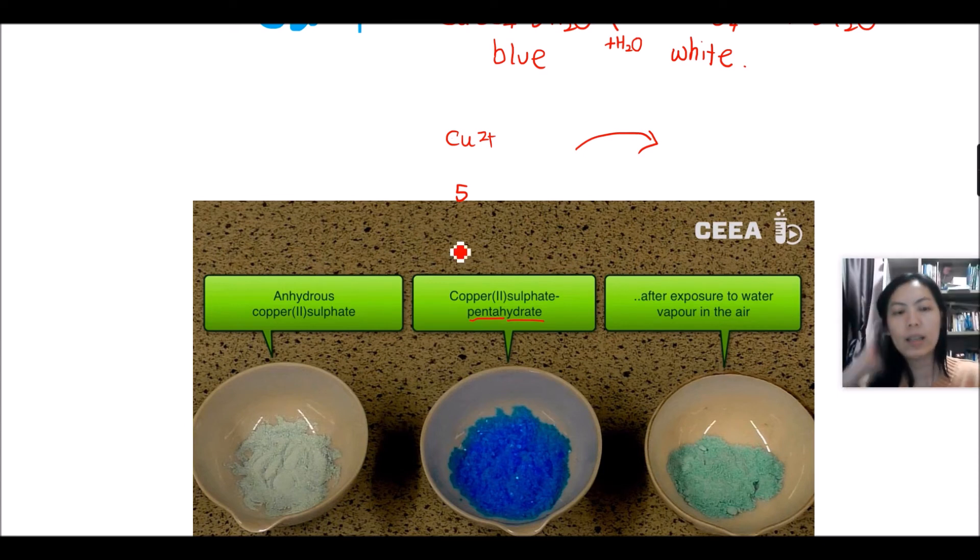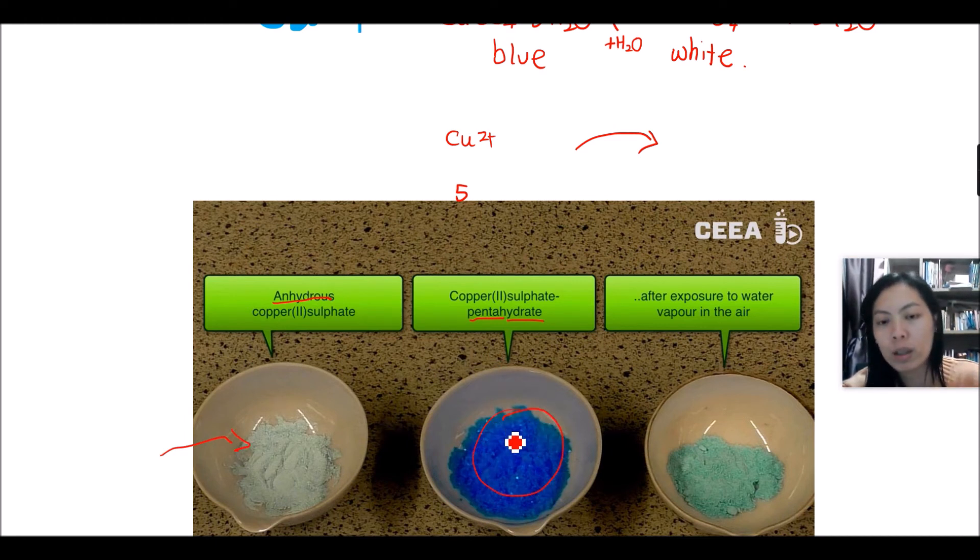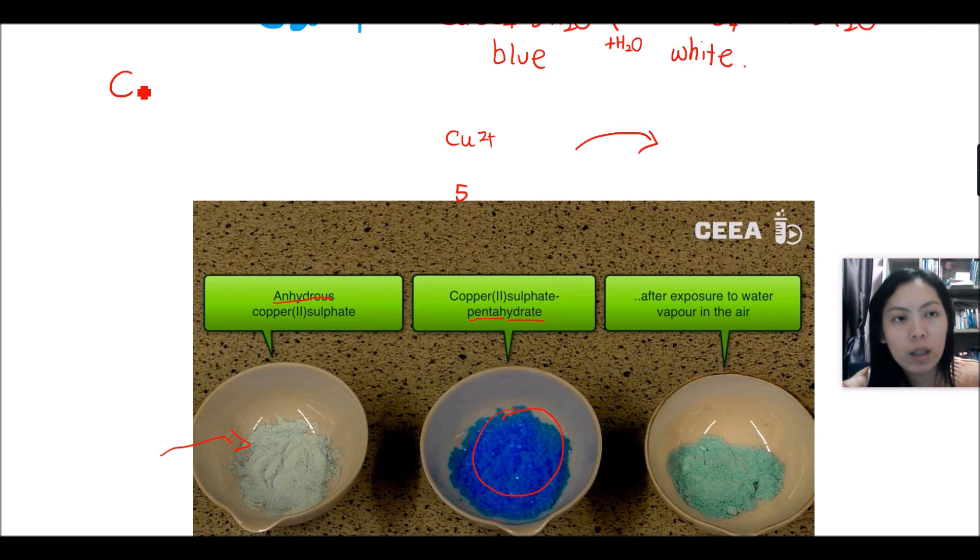Okay, as you can see here, this is the anhydrous, absence of water. When there isn't any water, the copper sulfate will be this color. In general, most of the time it is blue crystal, blue like this. This is copper sulfate pentahydrate. Copper sulfate when there is water will be blue.